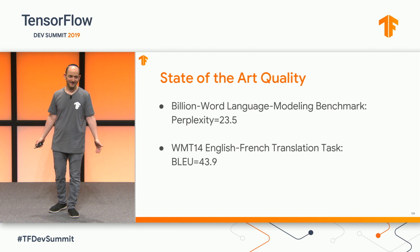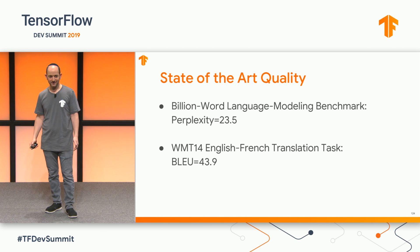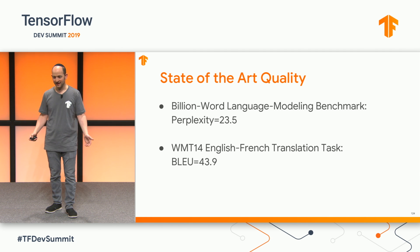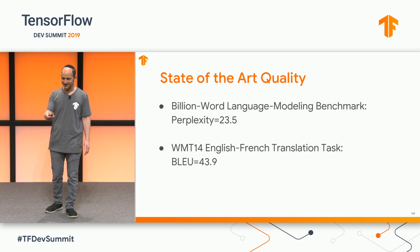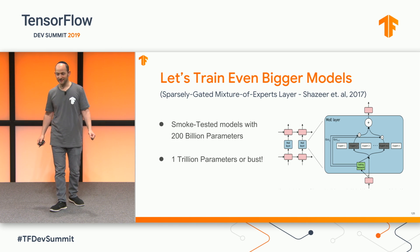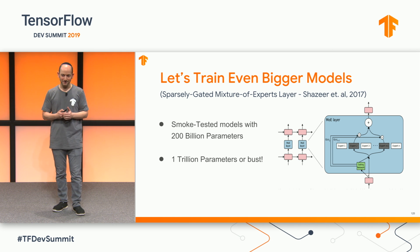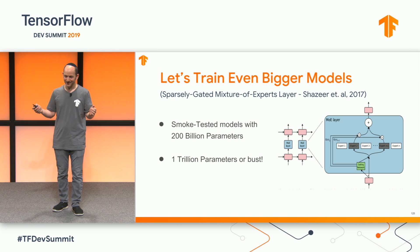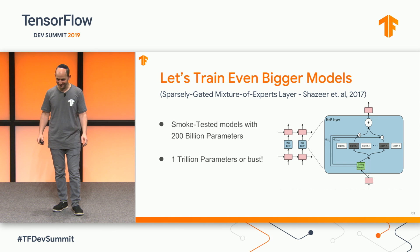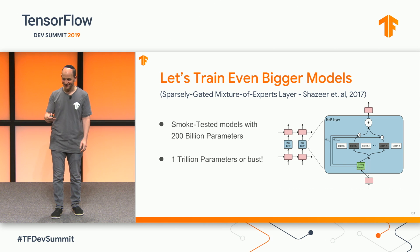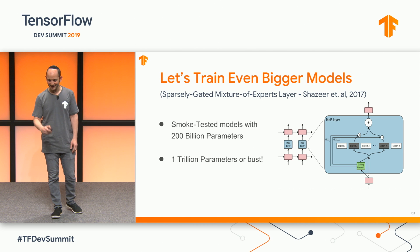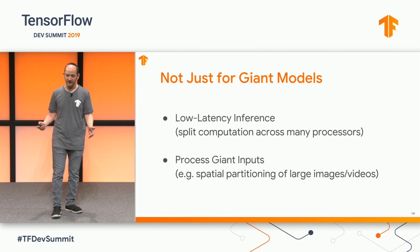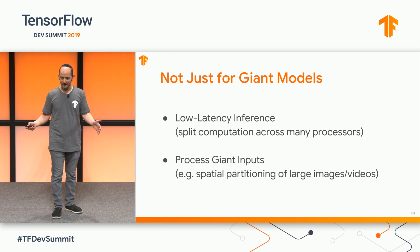These giant models give state-of-the-art quality on benchmark tasks like language modeling and machine translation. Not surprisingly, bigger models are better — lots of people are finding that out. In the future, we would like to try even bigger models. I think with some well-placed sparsity we would have the computation to train models with a trillion parameters. We've tried up to a couple hundred billion so far and it runs. So the next step is to see if we can get a trillion-parameter model to run and give us great quality. This should also be useful for low-latency inference and situations where you have giant inputs to process.